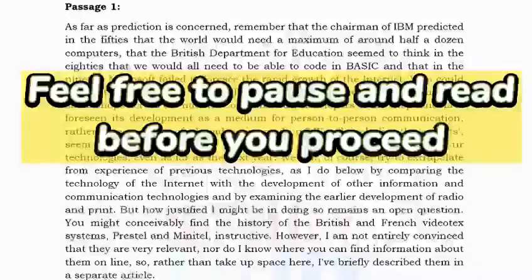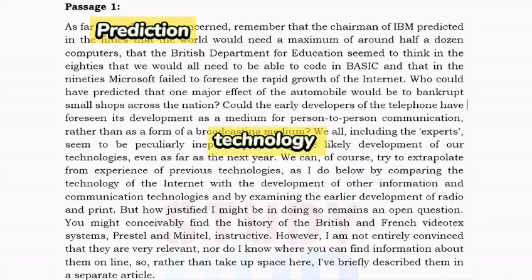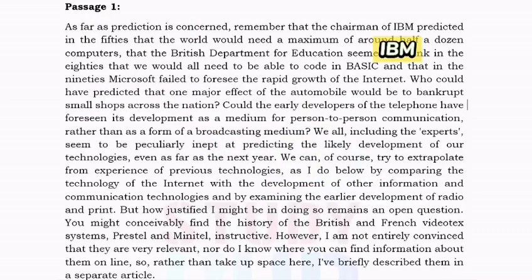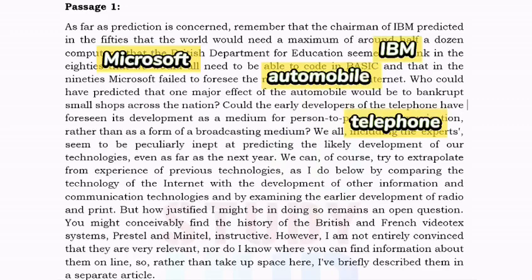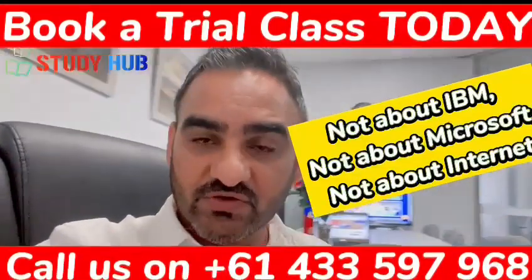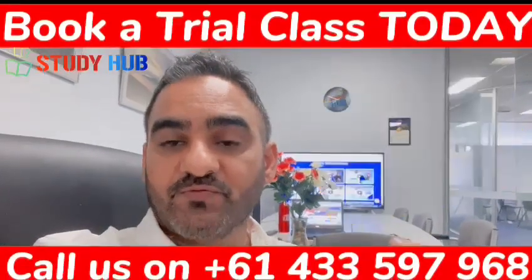Now if we go through this passage, what you can realize is it's talking about prediction. If you look at the most repeated words, they are prediction, technology, development, and communications. IBM is only getting used once, Microsoft is getting used once, and telephone or automobile industry — these are getting used only once. So that clearly shows it's not about IBM, it's not about Microsoft, it's about prediction of technology.